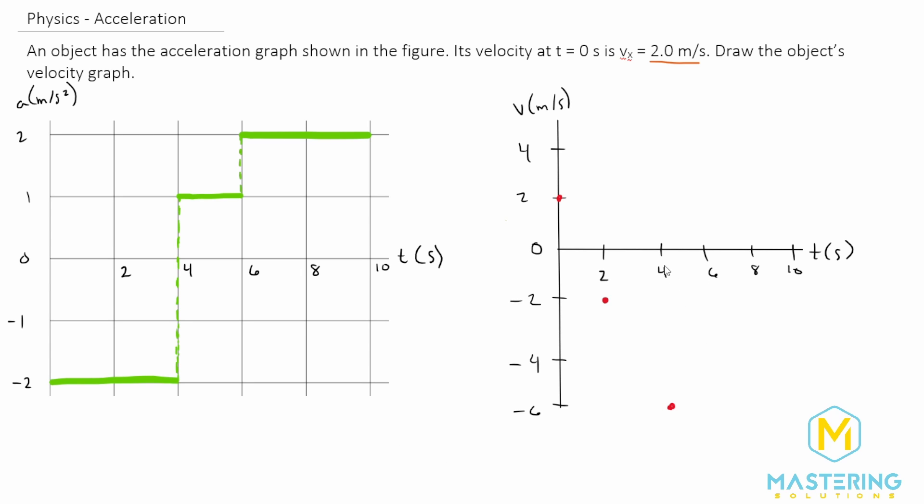And now from 4 to 6 seconds, we have a 1 by 2, so we go up a positive 2. Then from 6 to 8, we have positive 2 seconds multiplied by positive 2 meters per second, so we have 4 meters here. So from -4 we jump up to 0 at 8 seconds.